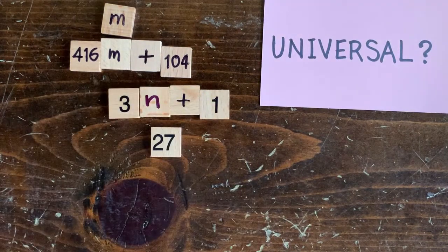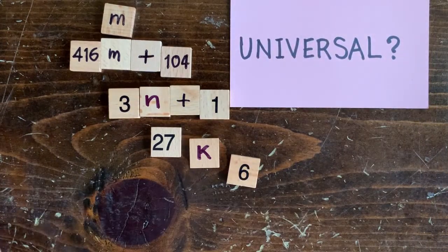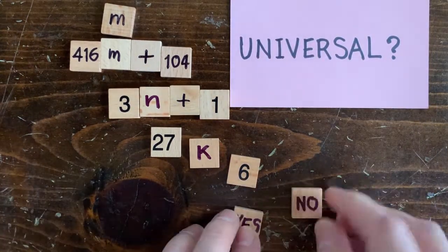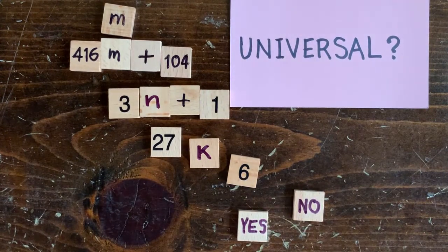Then put that big number into the 3N plus 1 machine. Stop it after 27 steps and you get some number k. If the last digit of k is 6, then say yes, m is prime. Otherwise, no, m is composite. Okay, I'm just kidding. That doesn't work.